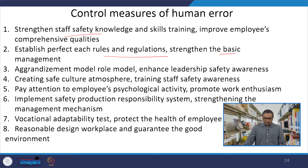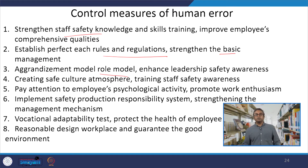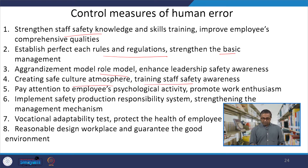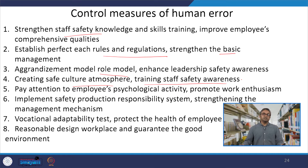The final control measure is making the role model — enhancing the leadership safety awareness program to make it more robust, so that one can understand the real situation and real environmental condition in which a person is working. Creating a safe cultural atmosphere, training staff, and safety awareness programs are similar to the earlier point of strengthening the staff safety program.